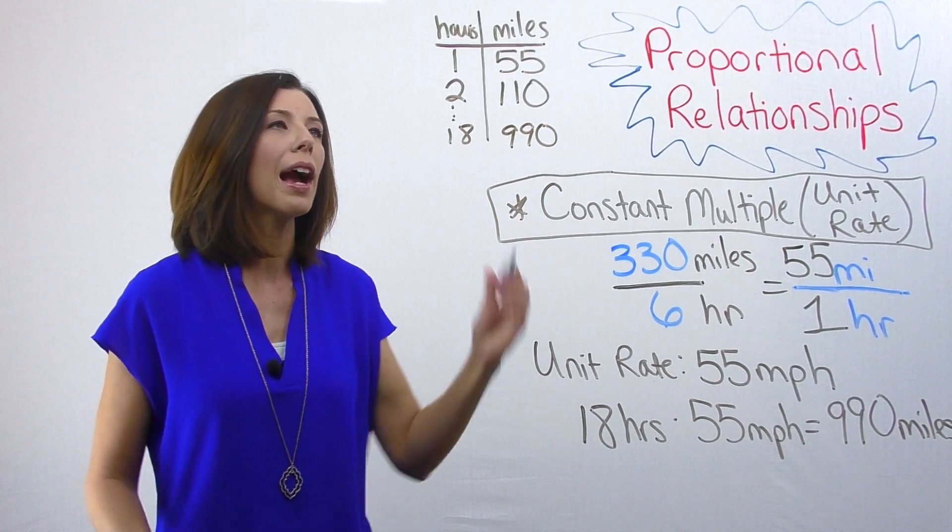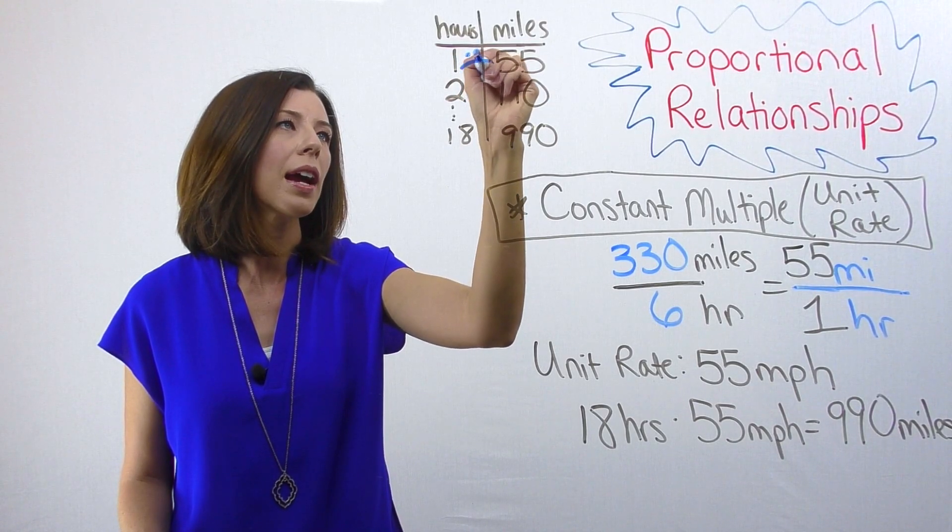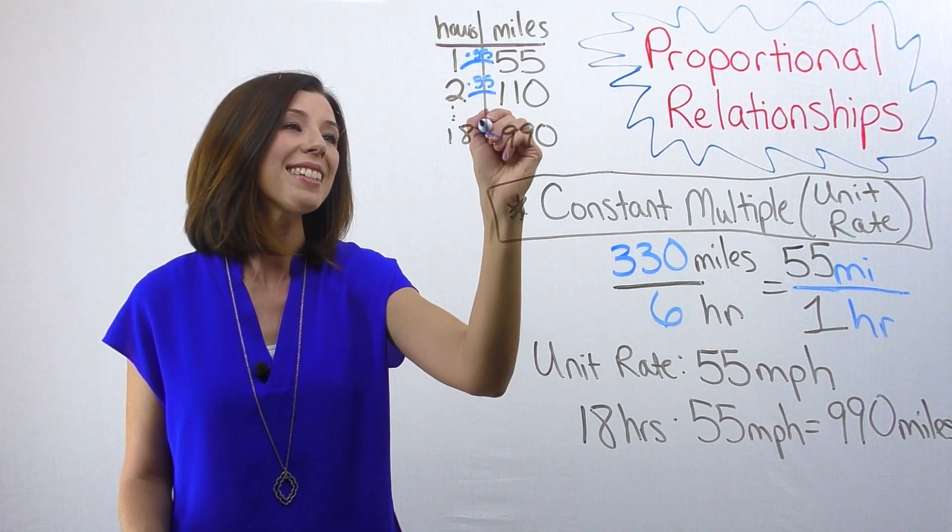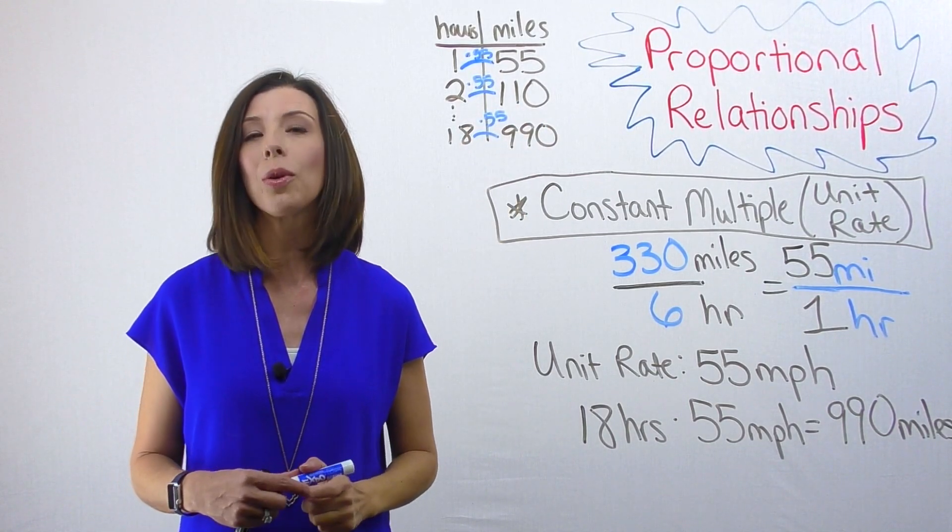Notice that with unit rate, we're actually multiplying across. So I'm multiplying one times 55, two times 55, 18 times 55. This is my constant multiple or unit rate.